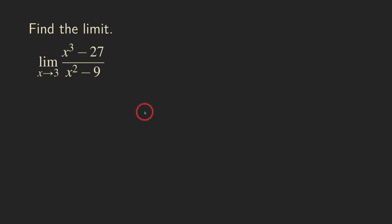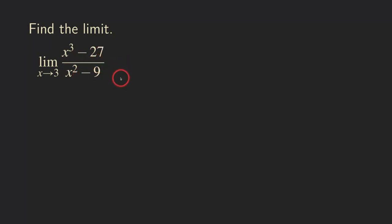Hello, everyone. Let's look at this limit here. We have this limit problem: x cubed minus 27 over x squared minus 9. So that's a rational function. And we want to find the limit as x approaches 3, what this function is approaching to.